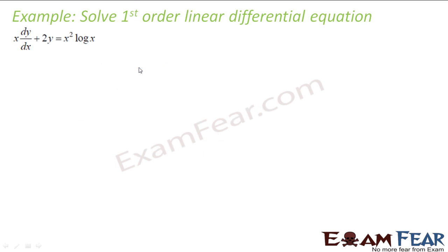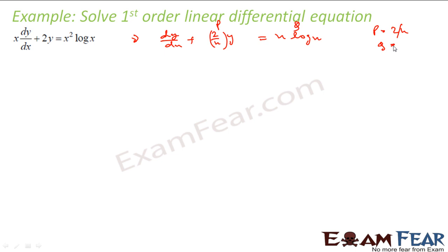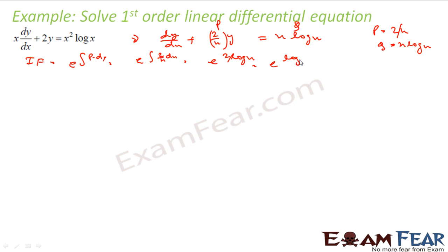Let's take one more example: x dy/dx + 2y = x² log x. Rearranging, you get dy/dx + (2/x)y = x log x. So p is 2/x and q is x log x. Finding the integrating factor: IF = e to the power of integration of 2/x dx = e to the power 2 log x = e to the power log x² = x². So IF is x².